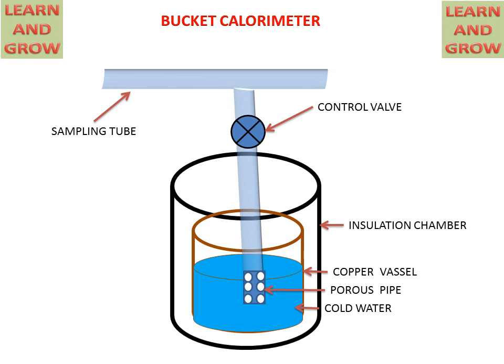At the end of the pipe in the copper vessel, there will be a porous pipe for the throttling process. There is a pressure gauge and a thermometer attached to the cold water in the copper vessel for measuring the temperature after the process.